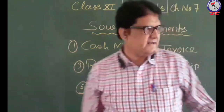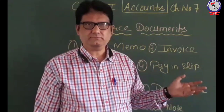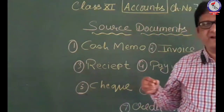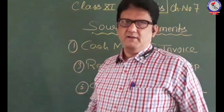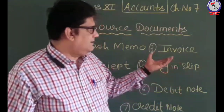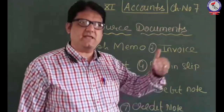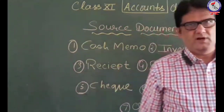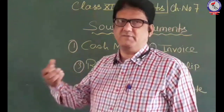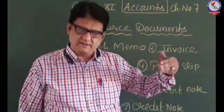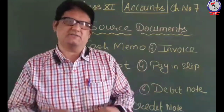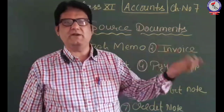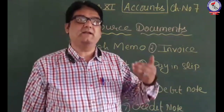Cash memo records details related to the goods sold — the quantity, the rate per piece or item, total amount to be received, and discount allowed. Then comes invoice or a bill. Invoice is also prepared by the seller, but it is prepared when the goods are being sold on credit. It includes the party name, type of goods, quantity, rate, total amount, and discount. The invoice is a documentary evidence that a business transaction has taken place on credit.